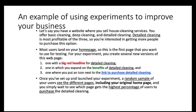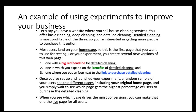Once you set up and launch your experiment, you choose a random sample of your users to see different pages — including the original, the one with the red headline, the benefits version, and the icon next to the purchase link. Then you simply wait to see which page gets the highest percentage of users to purchase — in other words, the highest conversion rate. When you identify which page drives the most conversions, you make that the live page for all users.